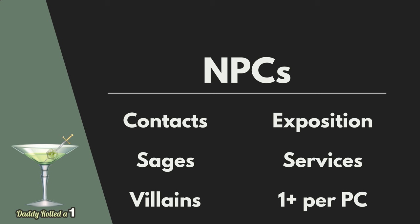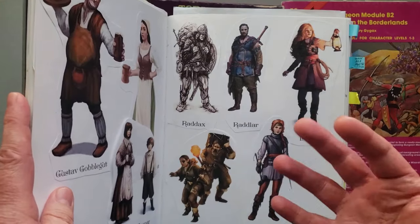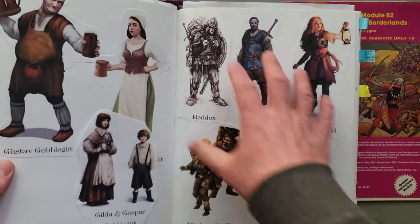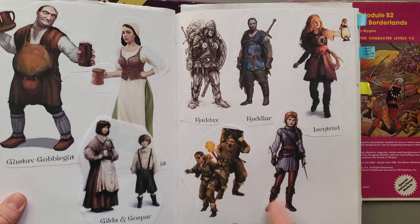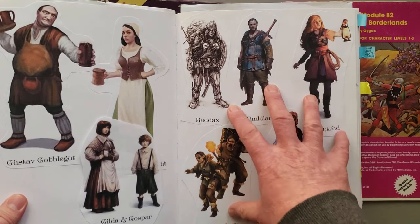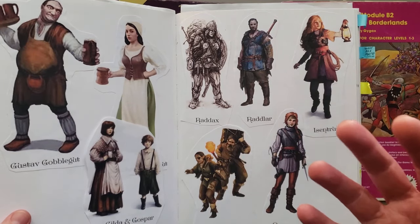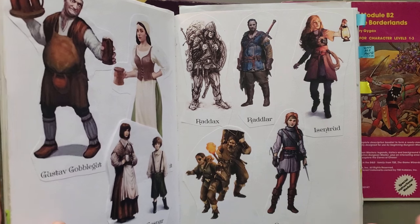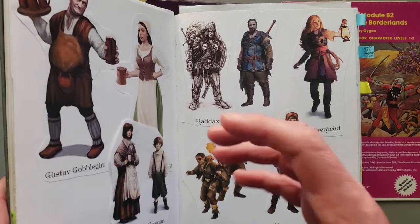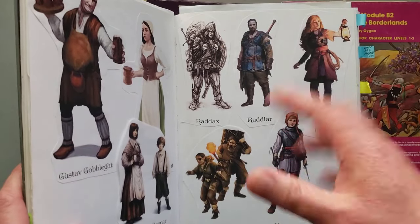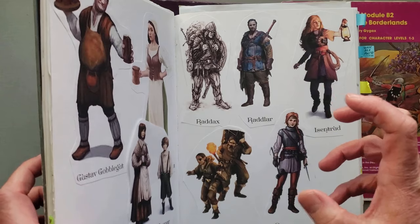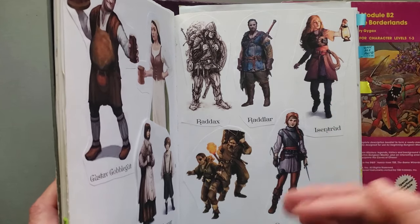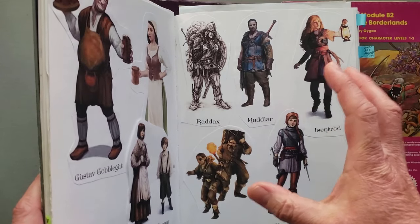Rather than droning on about stuff or giving players a big thing to read, I'll use NPC interactions and conversations to provide the exposition. I also use them for services — you see in my book here I had a bunch of characters, and all of these people were potential hirelings that they could have hired. Sometimes the NPC is just there to be used as a hireling or retainer by the player characters. And lastly, I always try to have a unique NPC for each player in the game so they have someone they feel is their specific NPC to interact with, and that helps them develop their own characters along the way.